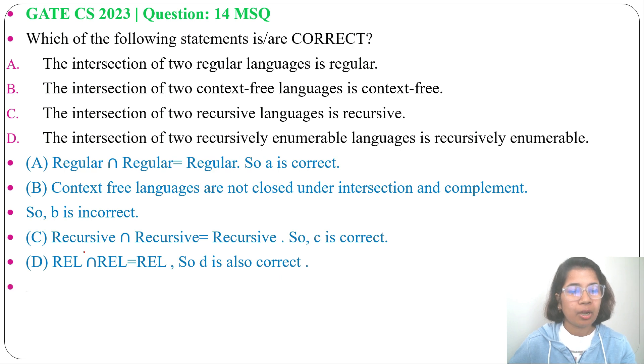So answer will be option A, option C and option D. Regular language, recursive language and recursively enumerable language are closed under intersection.